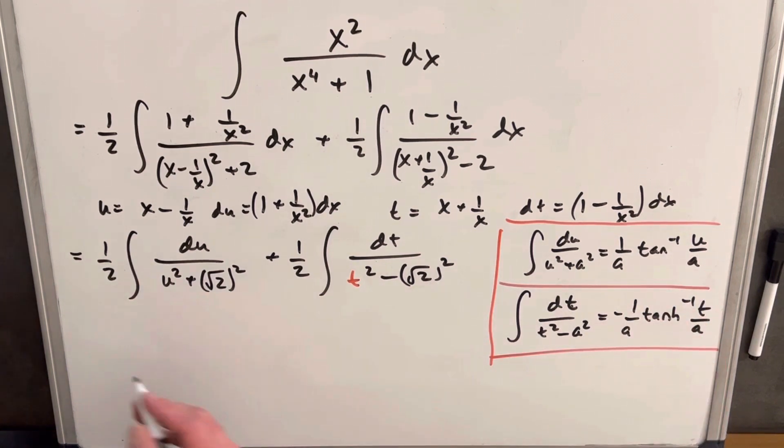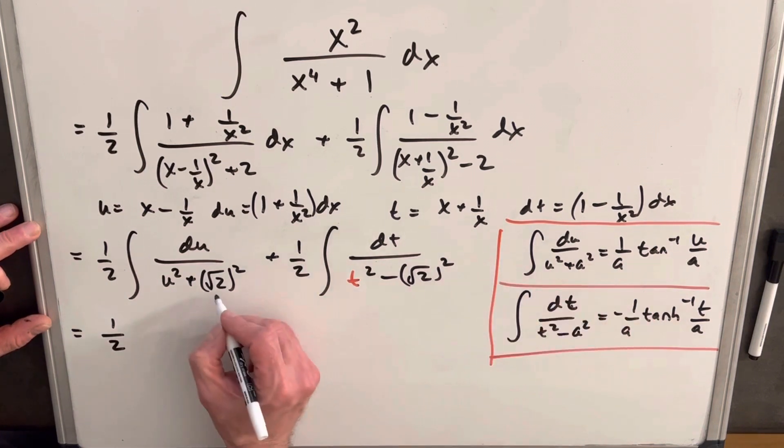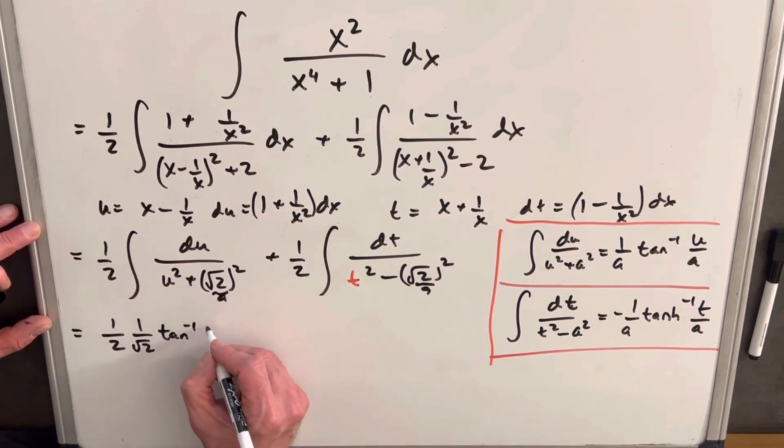So using these formulas, let's see what we get. We're going to have 1 over 2. We're going to have our a. So in both cases, our a is square root of 2. So we're going to have 1 over square root of 2, tan inverse, u over square root of 2.